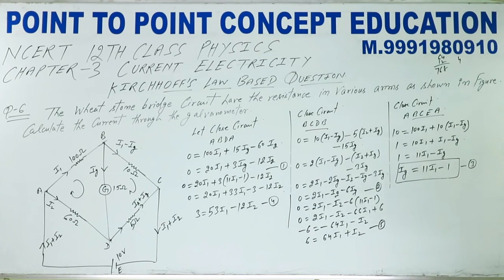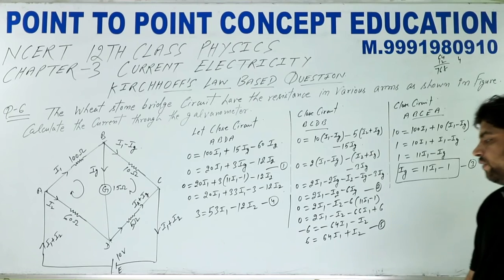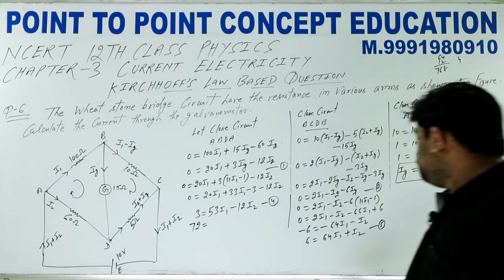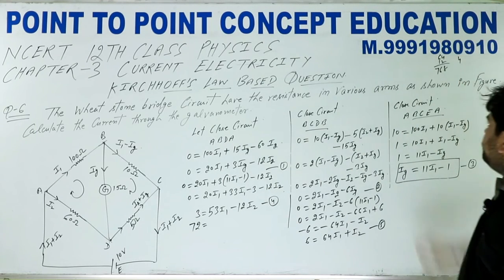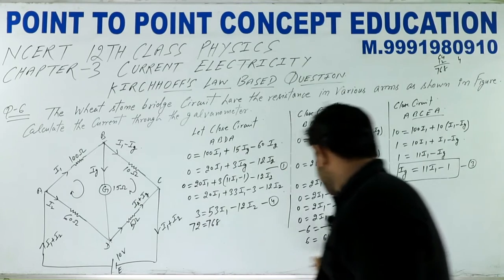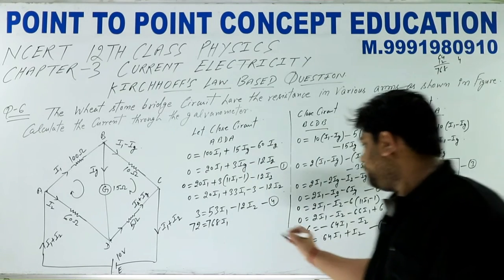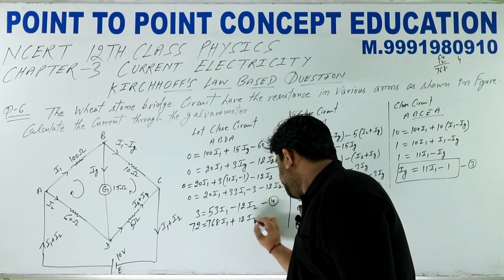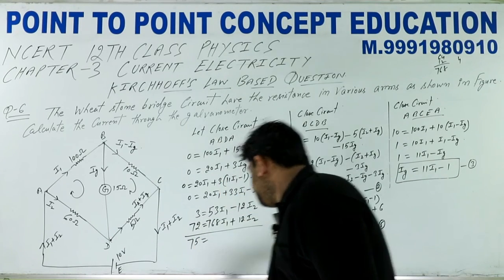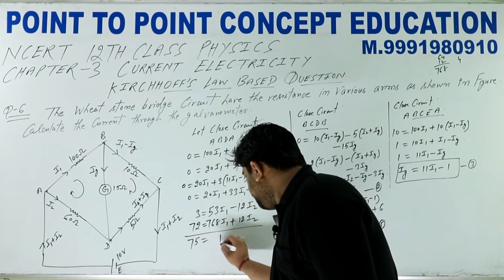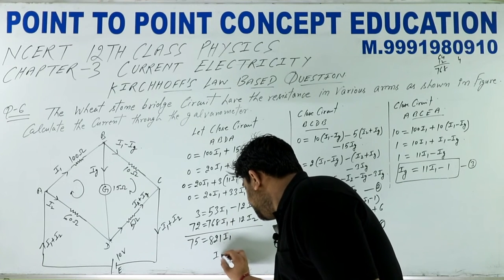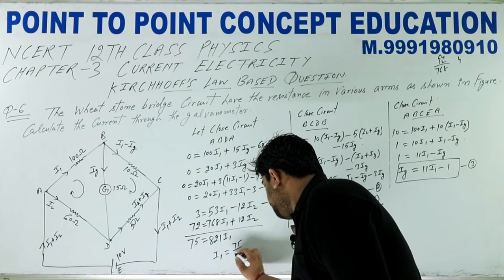Equation 4 और 5 को solve करना है। Equation 5 को 12 से multiply करने पर: 72 = 768·I1 + 12·I2। इसे Equation 4 में add कीजिए: 75 = 821·I1। I1 की value आ गई: I1 = 75/821।